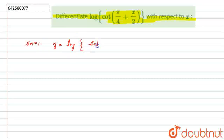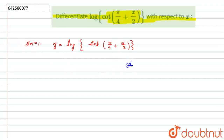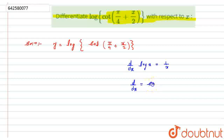We have the expression: log of cot of (π/4 + x/2), and we have to find its derivative. As we know the formula, d/dx of log(x) is equal to 1/x. Similarly, d/dx of cot(x) is equal to minus 1 upon sin²(x).